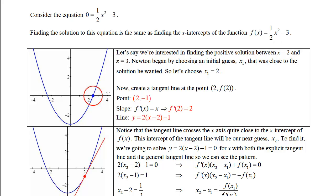So let's say we're interested in finding the positive solution that is between 2 and 3. Newton began this process by choosing an initial guess called x sub 1 that was close to the solution that he wanted. So let's choose x sub 1 to be 2.